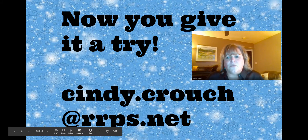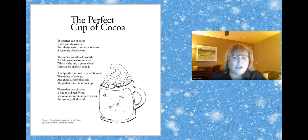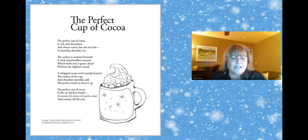Before we go, I want to share one last poem with you — it's a poem that I absolutely love. It's called The Perfect Cup of Cocoa, and it was written by Barbara Vance. It's published in a book called Susie Bittner Was Afraid of the Drain, which is one of the books we have in the library. The perfect cup of cocoa is rich and chocolatey and always warm, but not too hot — a steaming chocolate sea. The surface is enclosed beneath a thick marshmallow mound, which melts into a gooey cloud without the slightest sound. A whipped cream swirl extends beyond the surface of the cup and chocolate sprinkles add the perfect touch to dress it up.